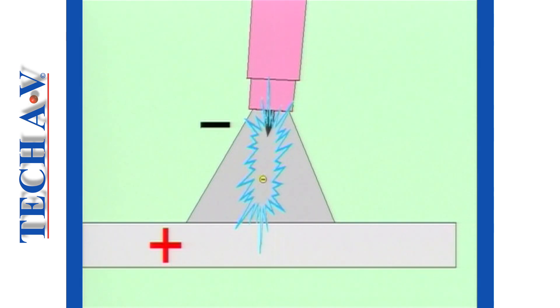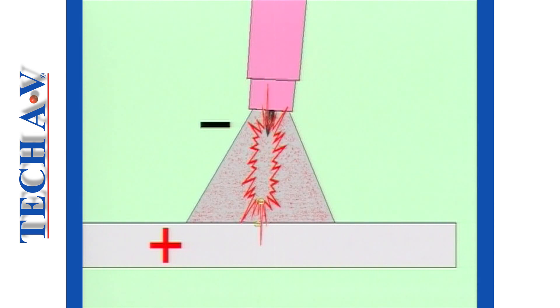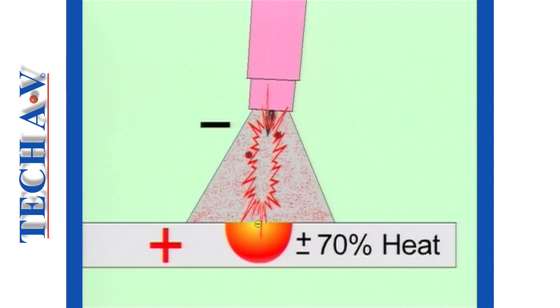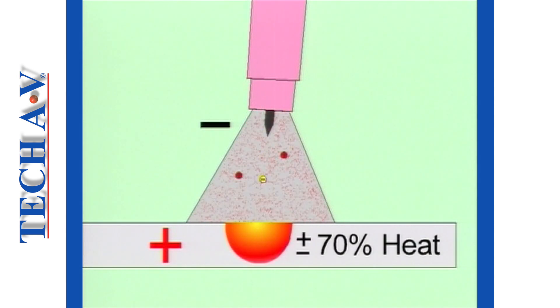The heat generated in the welding arc causes the shielding gas to ionize. Gas ions are positively charged particles and they move in the opposite direction to electrons. Electrons effectively carry about 70% of the arc heat and place this onto the positive pole of the arc. Ions effectively carry about 30% of the arc heat and place this heat onto the negative pole of the arc.